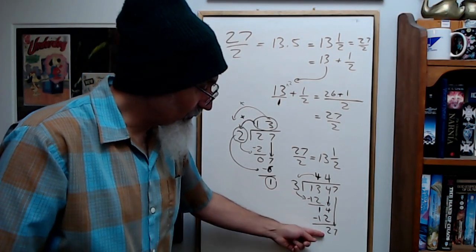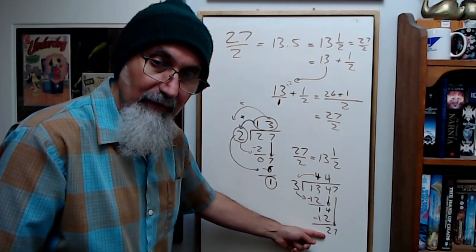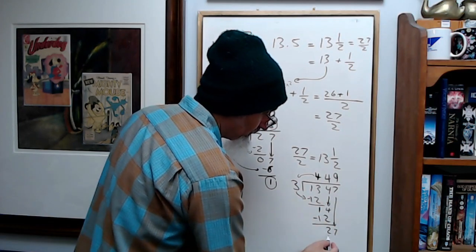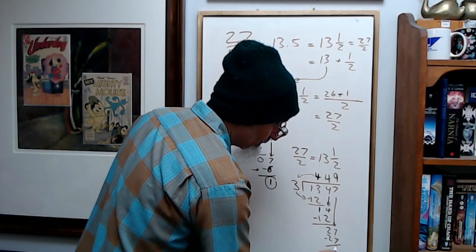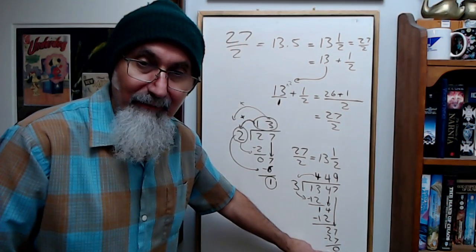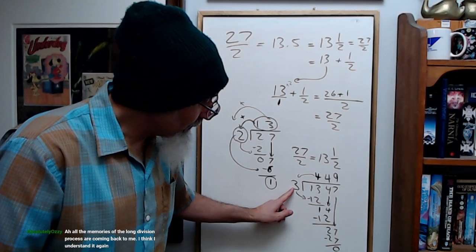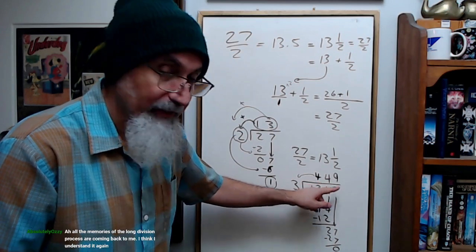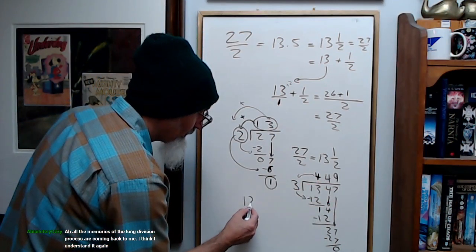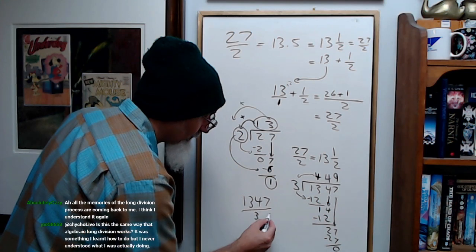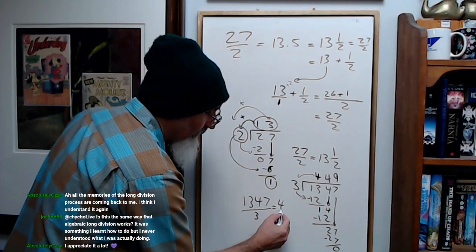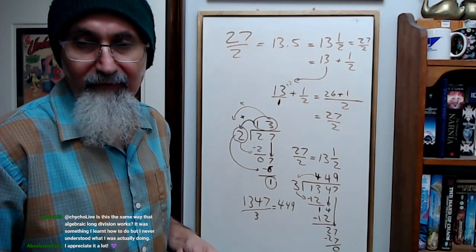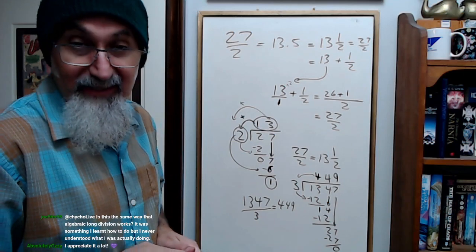You ask yourself again, how many times does 3 go into 27 evenly? 9 times. So you get a 9 here. 9 times 3 is 27. You subtract it, you get 0. When you get a remainder of 0, it means this number goes into this number evenly. And how many times is that? That's 449. So 1347 divided by 3 is 449. Zero remainder, so it just goes into it evenly. Does that help you out?